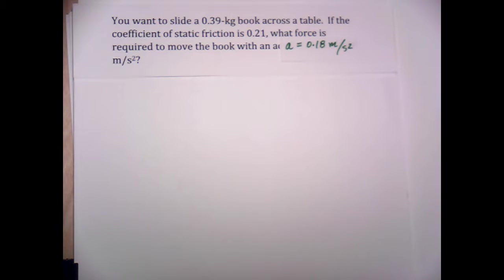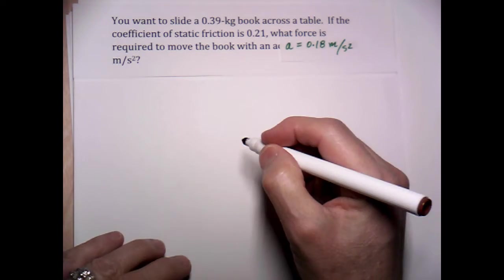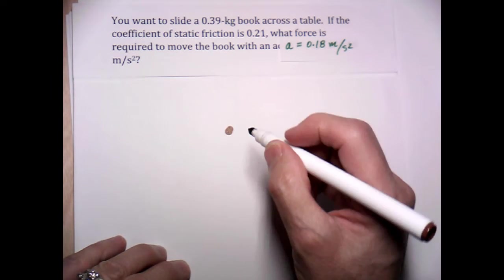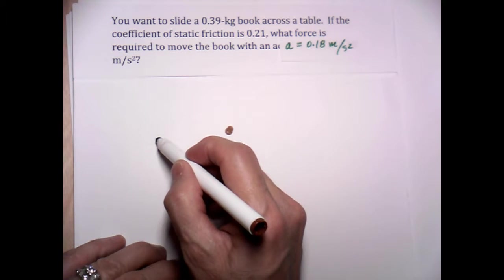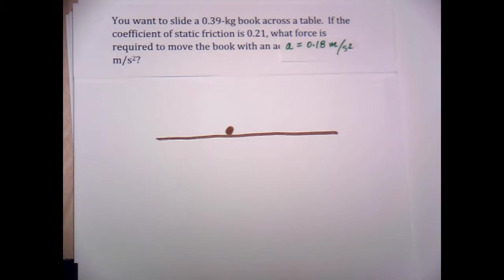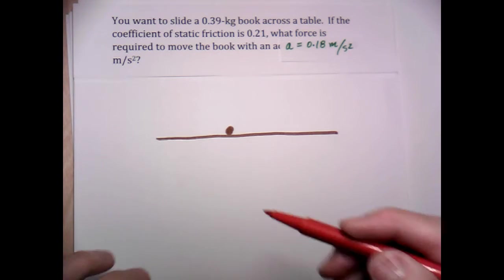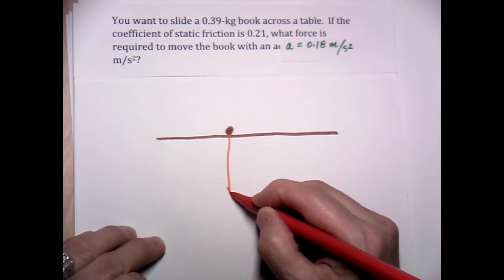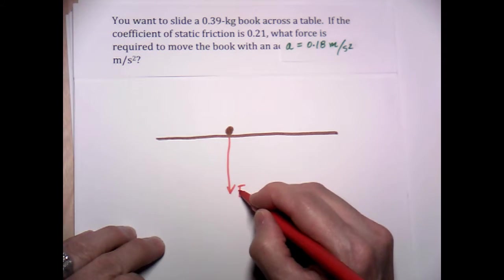As we usually do, we start out with a free body diagram. So here's the object, here's the book, and here it is sitting on a table. We start straightaway asking ourselves our usual questions. Is there gravity? Well, there is. And so I'll draw the down arrow and label it FG.